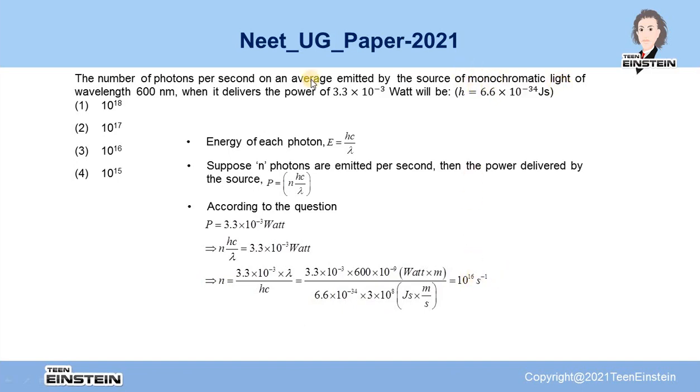the source has to emit 10^16 photons per second to deliver 3.3 × 10^-3 watts of power. Hence, third option is the correct answer for this problem. Thank you.